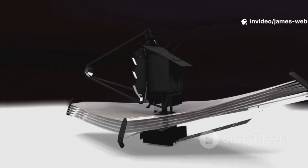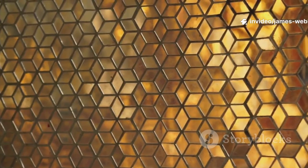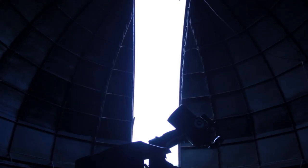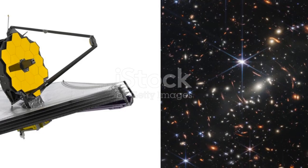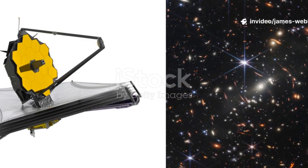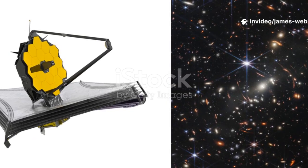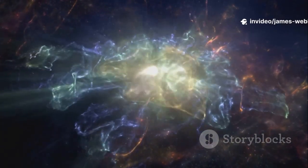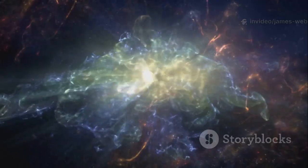Its giant golden mirror, a honeycomb of 18 hexagonal segments, unfolds like a metallic flower. This mirror is designed to collect the faintest whispers of light, light that has travelled across unimaginable distances and for immense periods of time. It is a time machine, allowing us to see the universe not as it is,